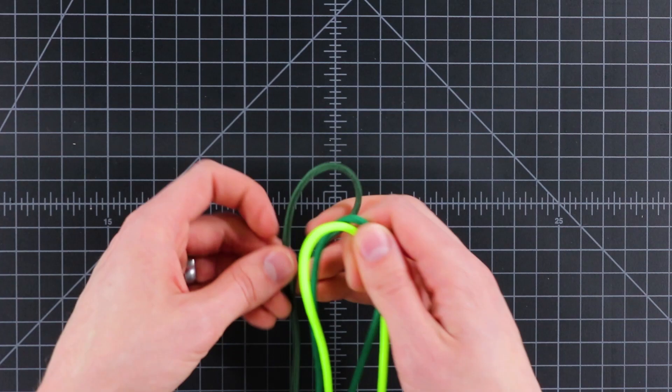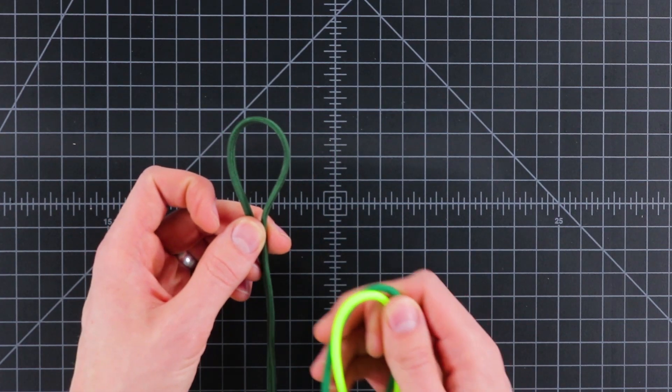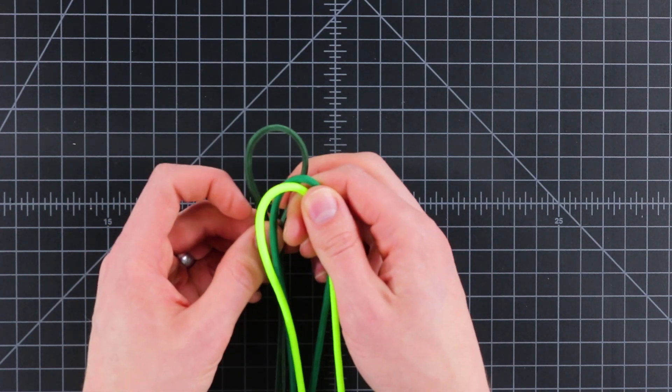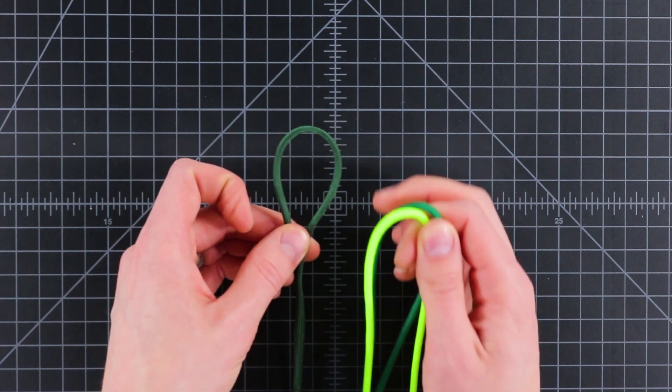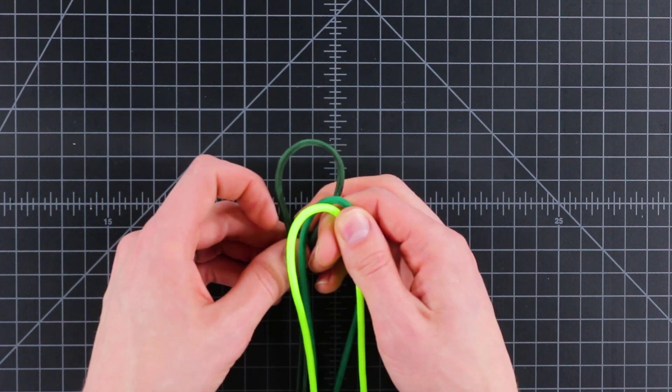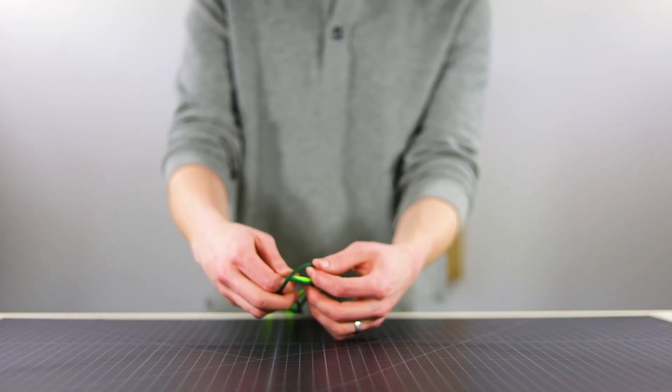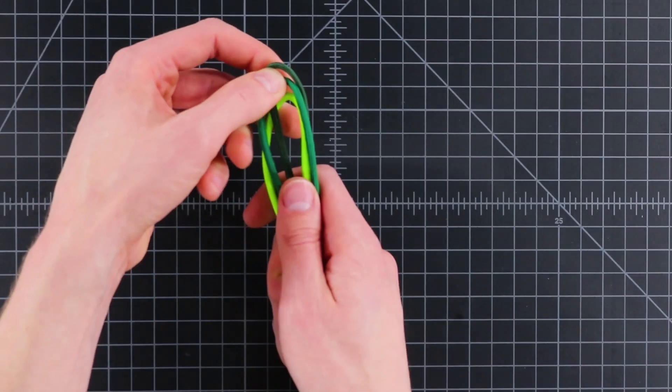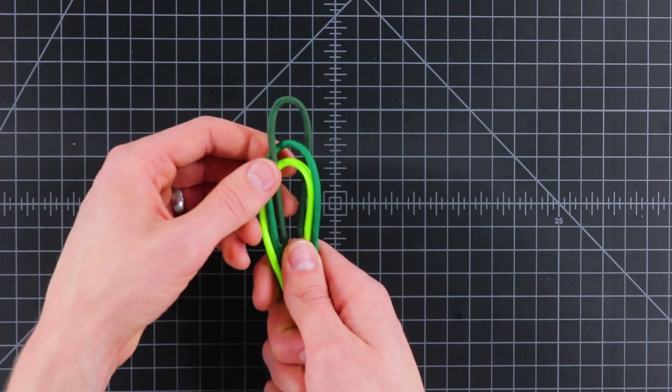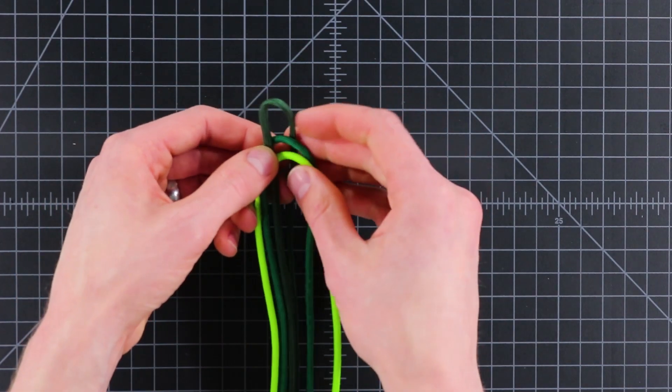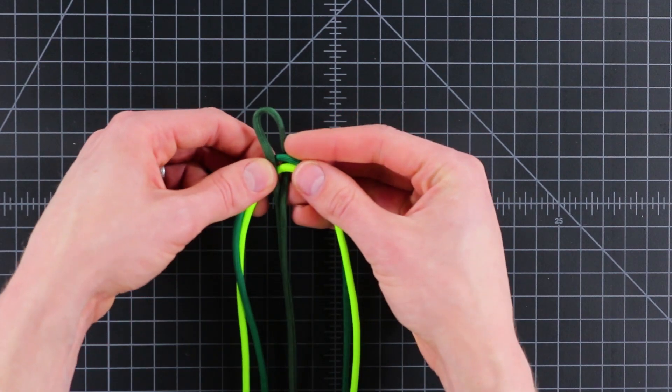So start by making a loop in the middle of each of your colors. This loop is going to be a little bit longer because we're having the closure, or we'll have the diamond knot fit through there. Just pass them in between. Alright, so we'll have our loop of dark green up on top, and then our doubled up green just below it here,